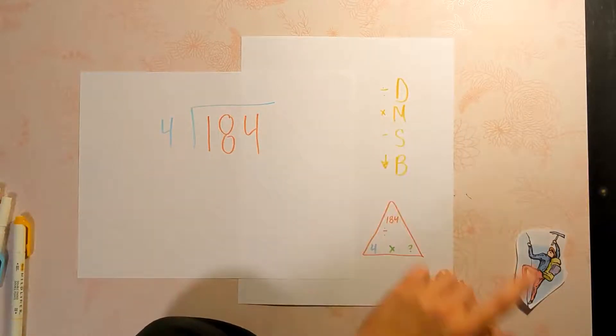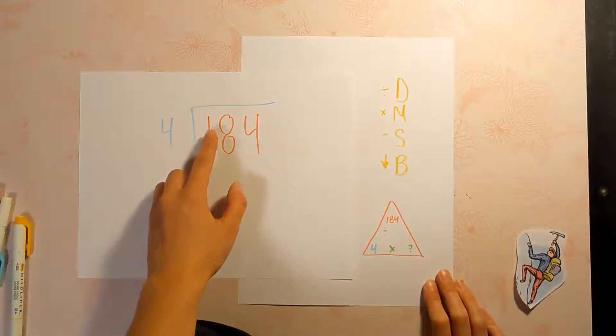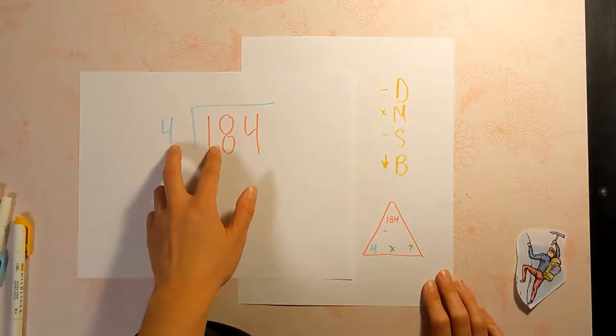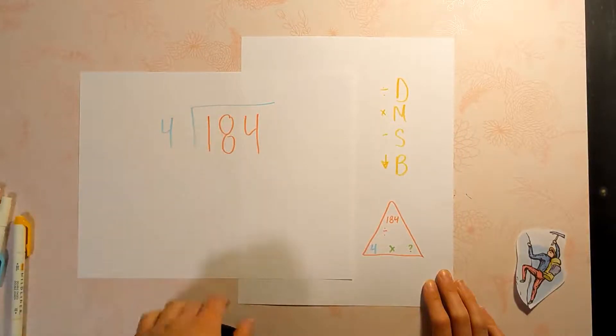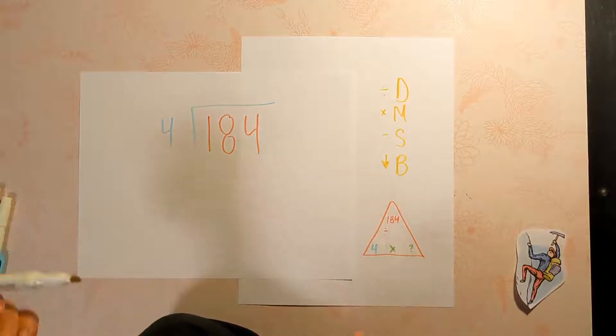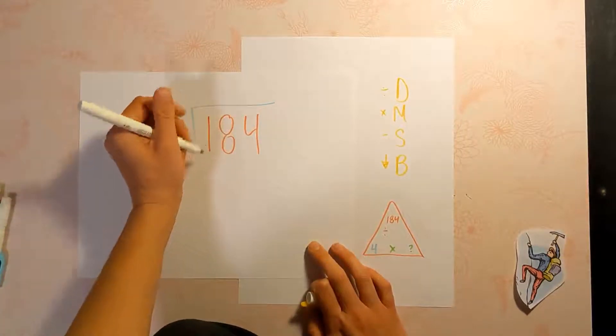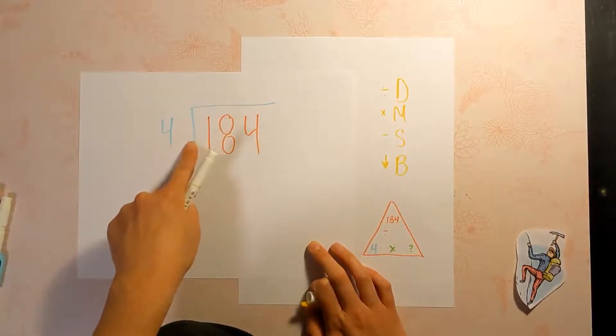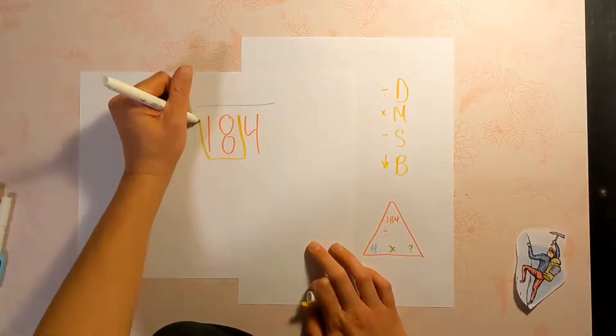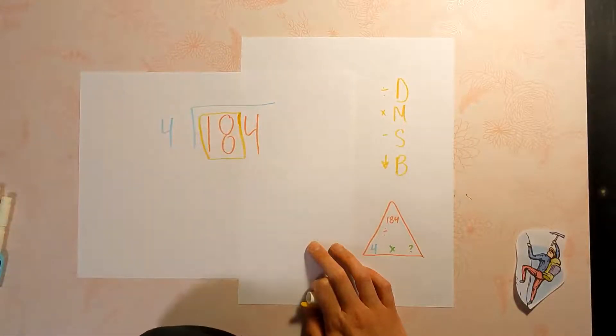Our first step is to divide. Normally we would start with this one right here and do one divided by four, but we can't do that because one is smaller than four. So in that case, just do 18. If that first digit is smaller and you can't do it, just look at it like this: 18 divided by four.